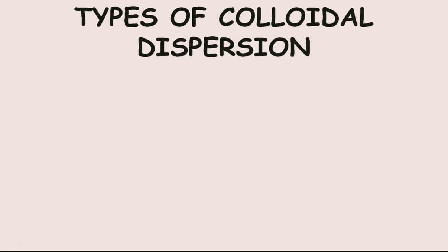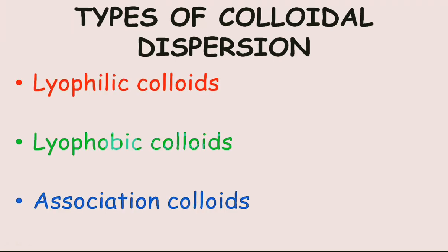Hello friends. Today we will discuss types of colloidal dispersion. Colloidal systems are best classified into three groups: lyophilic colloids, lyophobic colloids, and association colloids, on the basis of the interaction of the particles, molecules, or ions of the dispersed phase with the molecules of the dispersion medium.